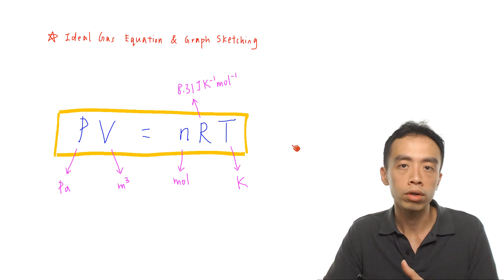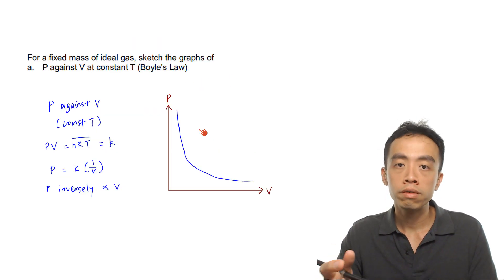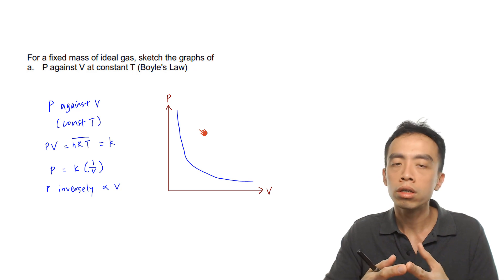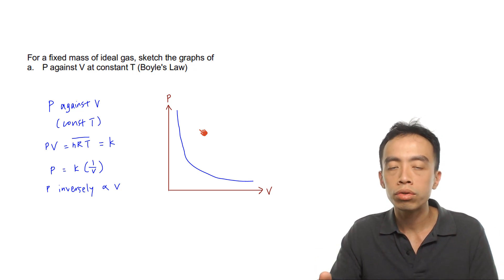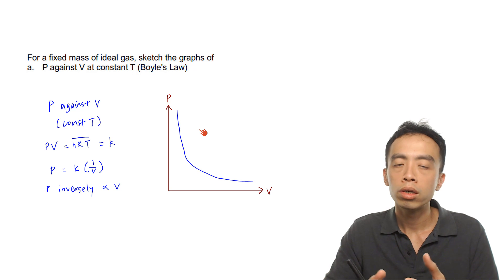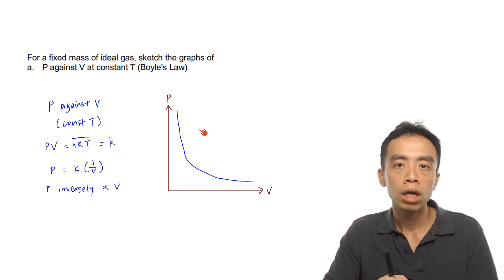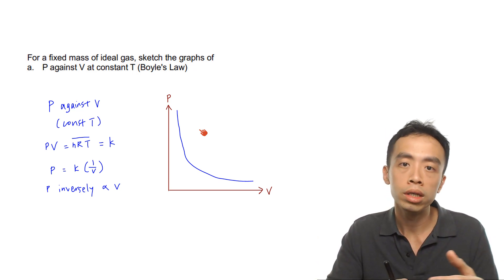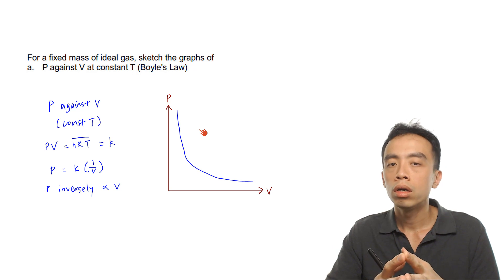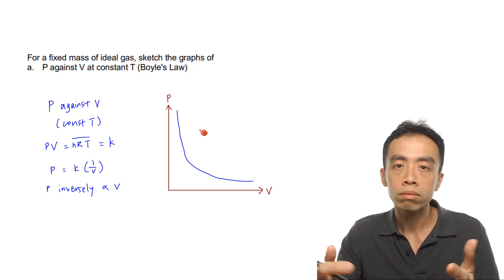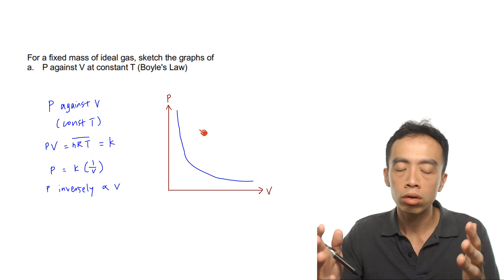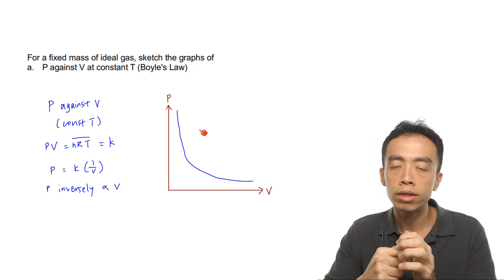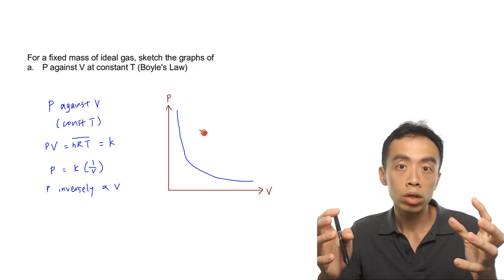Usually there's an unknown and we solve for it. In this video, instead of calculation questions, we are more interested in graph sketching. Questions will give us certain conditions, and we need to identify which terms in PV equals nRT are constant, then lump those constant terms together.